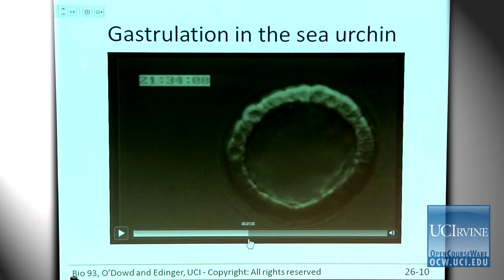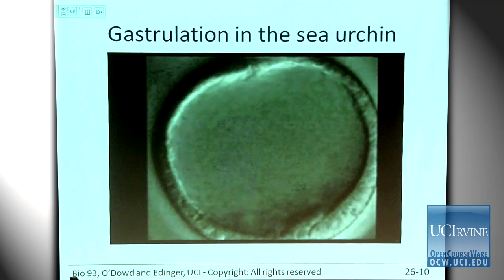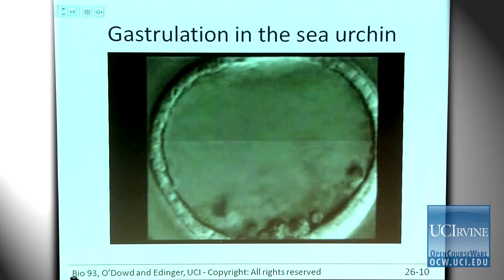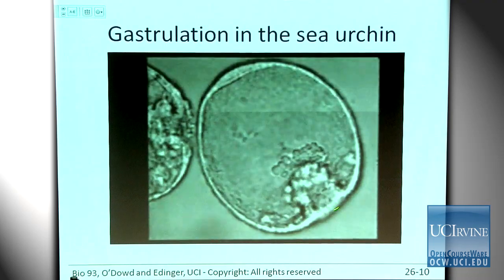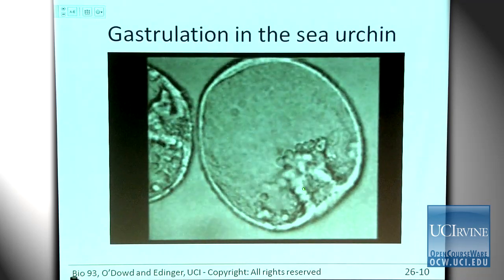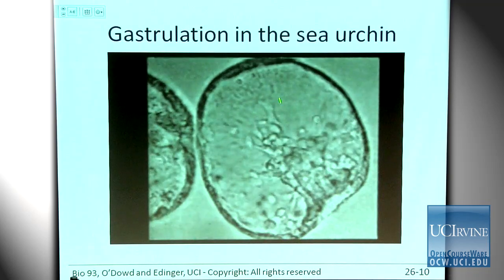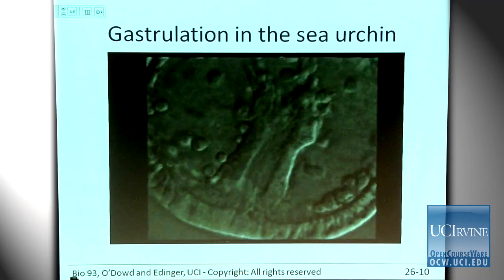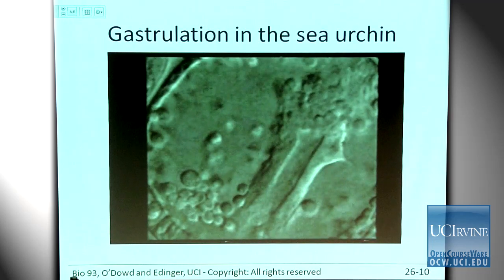Here's a video of sea urchin gastrulation. Here's the blastula, and you can see the primary mesenchyme cells undergoing ingression, crawling out into the blastocoel. Then you can see invagination — the archenteron is forming. Up at the top, the secondary mesenchyme cells are extending their filopodia, and you can see convergent extension: a rearrangement of the future endoderm cells to help them reach the other side of the blastocoel.